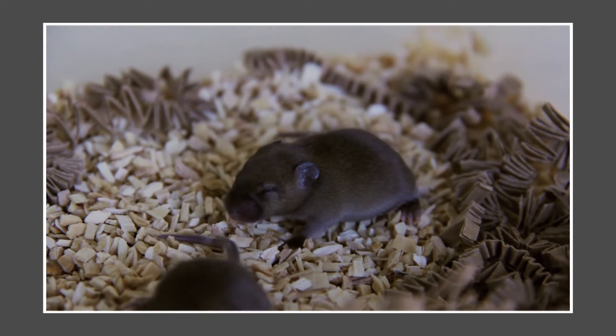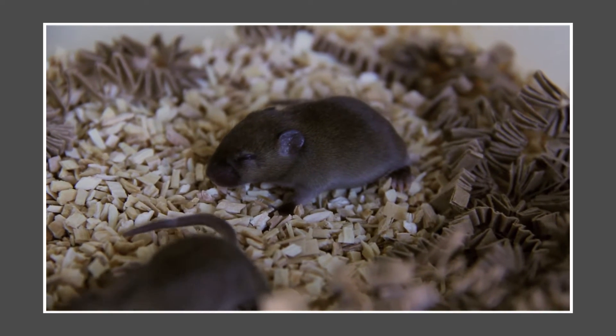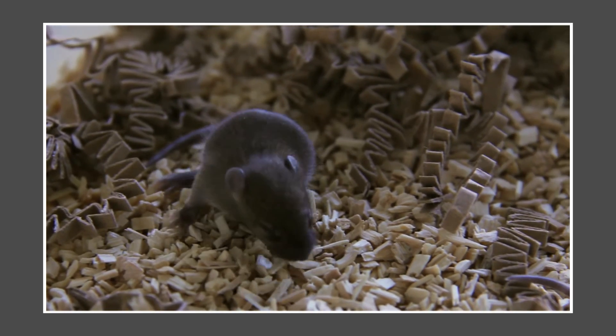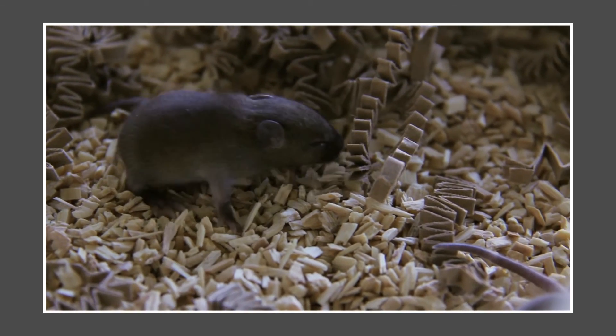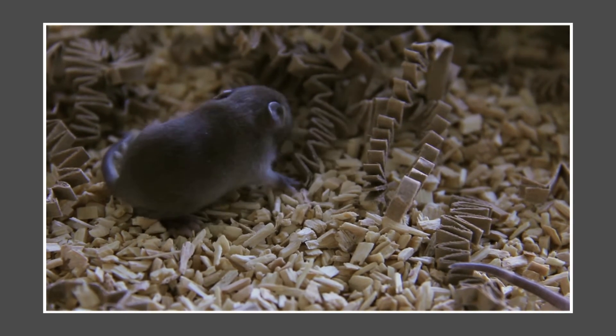Yet when they open their eyes and start interacting with their environments, neurons in the hippocampus, for example, or the visual system, compute information pretty much like in the adult.